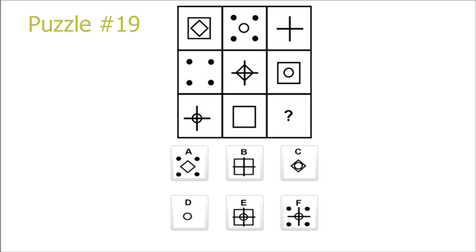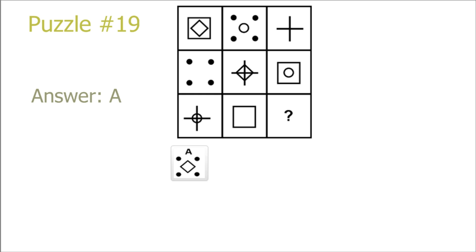Puzzle 19. This is another diagonal puzzle. We see that there is a repetition of circle, rotated square, and nothing going from the top left to the bottom right diagonal. So we know that our answer contains four dots and a rotated square in the center. Our answer is A.